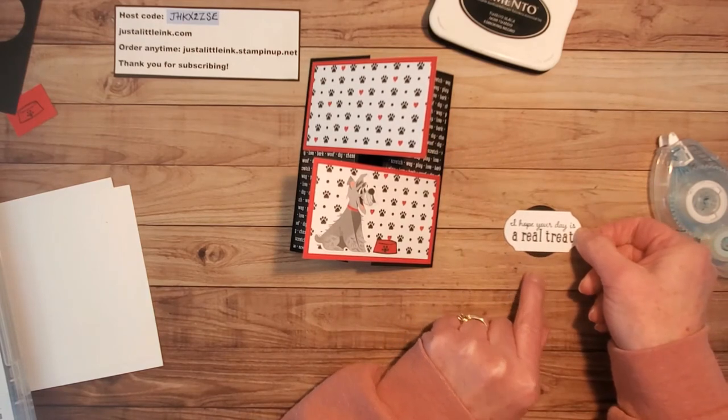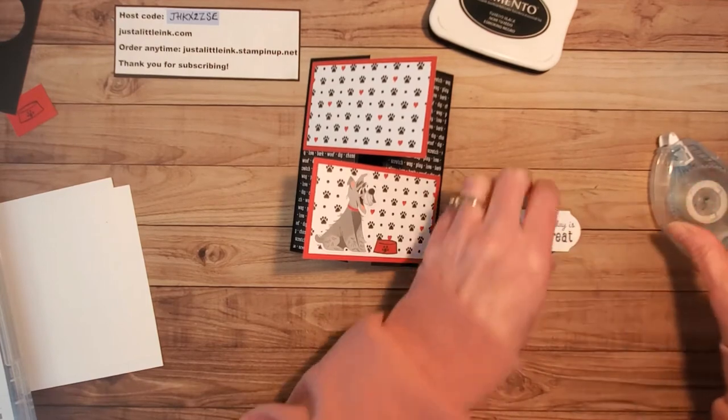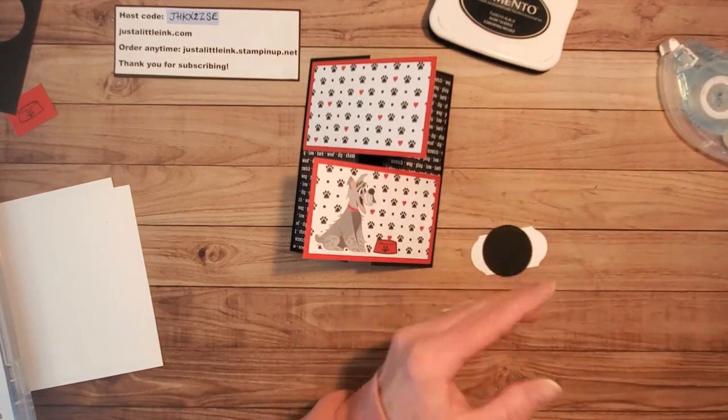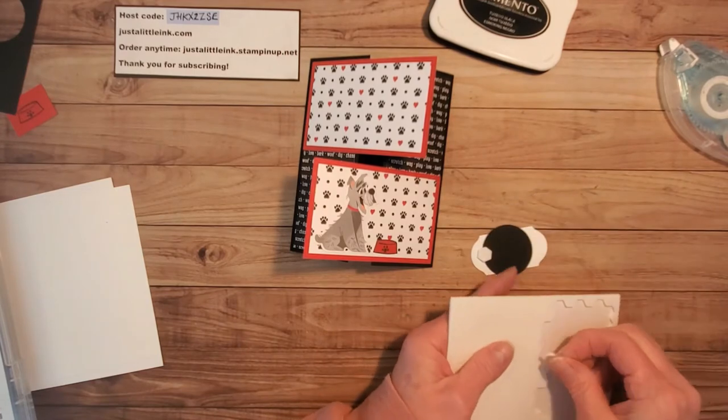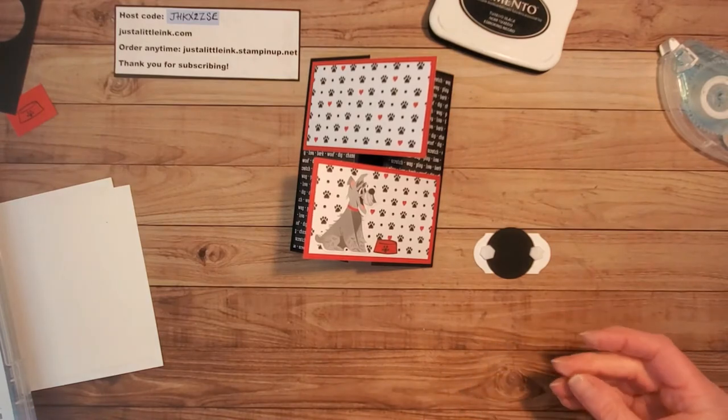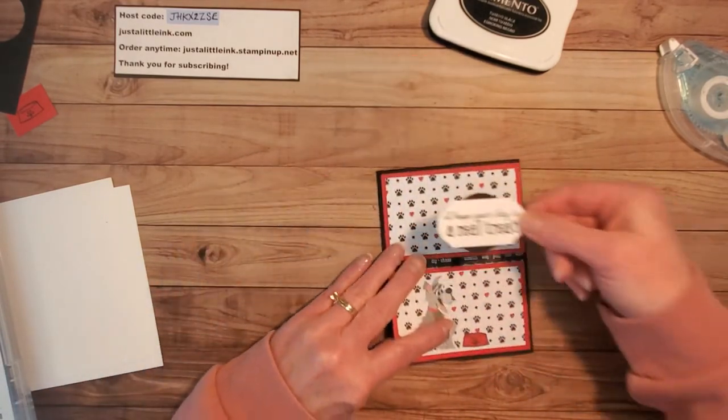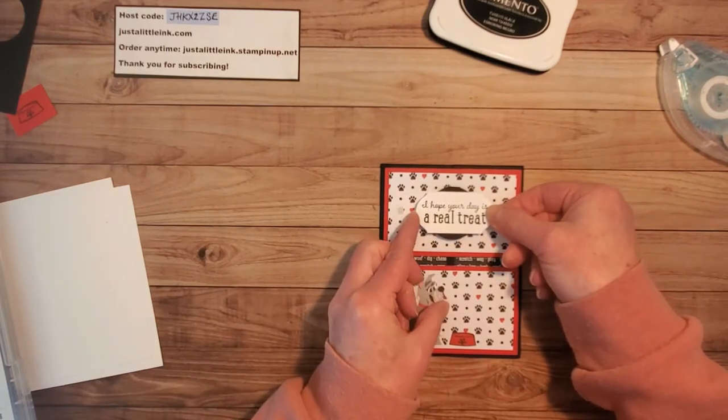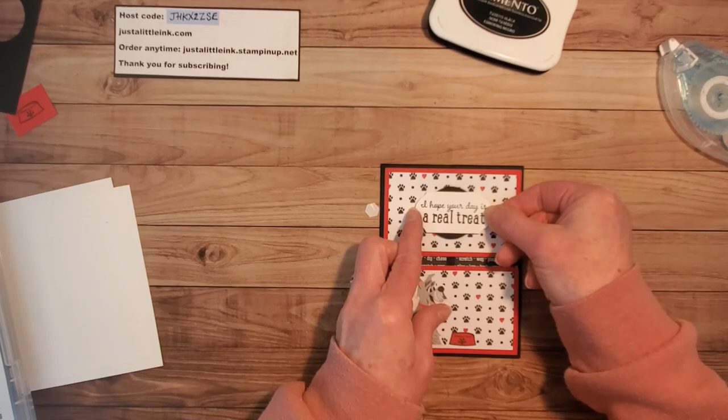Then I'm going to use some stampin dimensionals on the back. I just need a couple of them. I don't need a lot, but those are what's coming on the front. So this will make a wonderful birthday card I think.